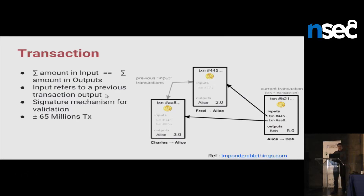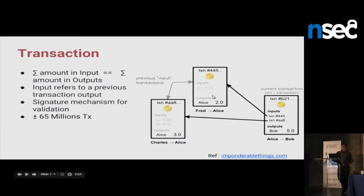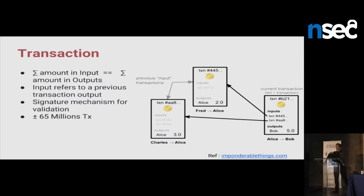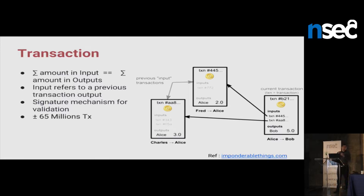Alice referred to previous transactions to say: I received money in this transaction, now I'd like to spend it. She is referring to outputs of previous transactions. She says: I have this transaction, I received money in the output, now I will spend it as an input in the new transaction. She has the right to spend it and signs it in the new transaction. To prove she owns those addresses, she signs the input with the private key associated to those addresses.